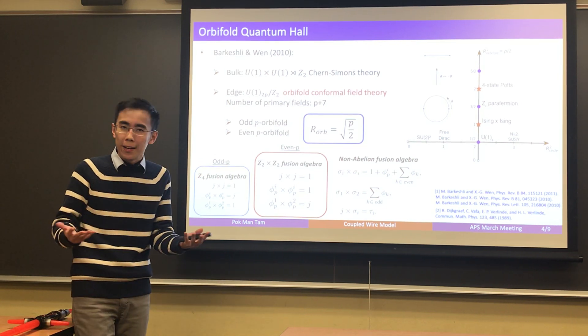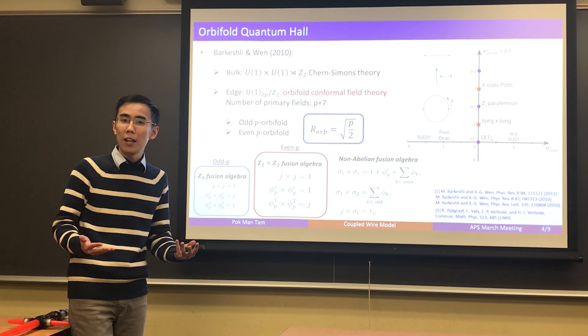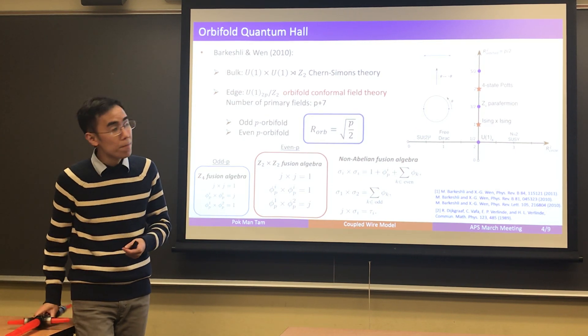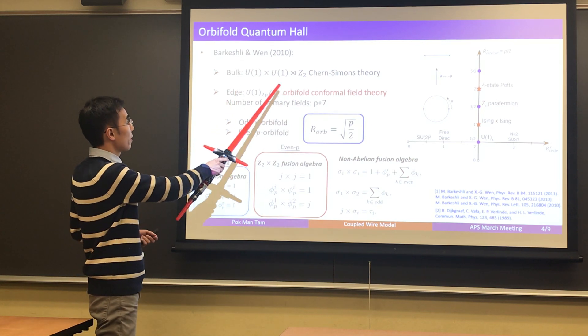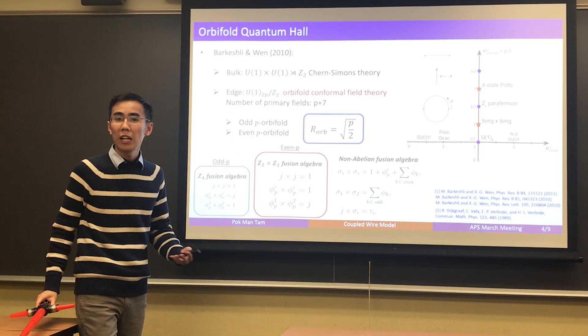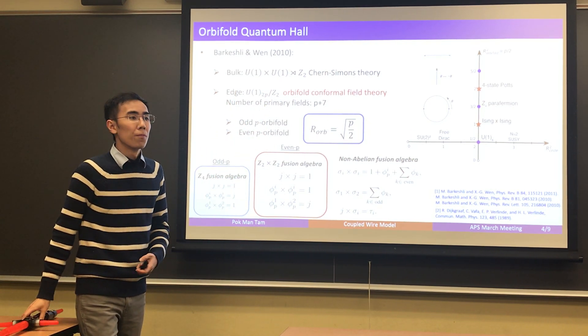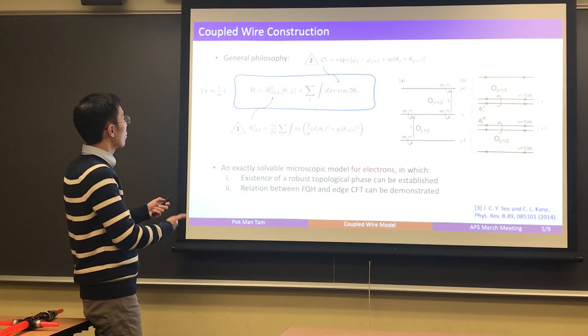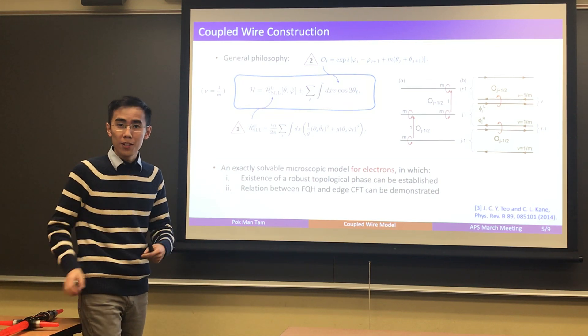So, what's missing here? What's missing here is the link to electrons. We're actually not sure whether the electrons can do the job to produce these states, because after all, the field theories are not written out in terms of the electronic degrees of freedom. So, to fill in that little gap of understanding, we used coupled wire construction to study these states.